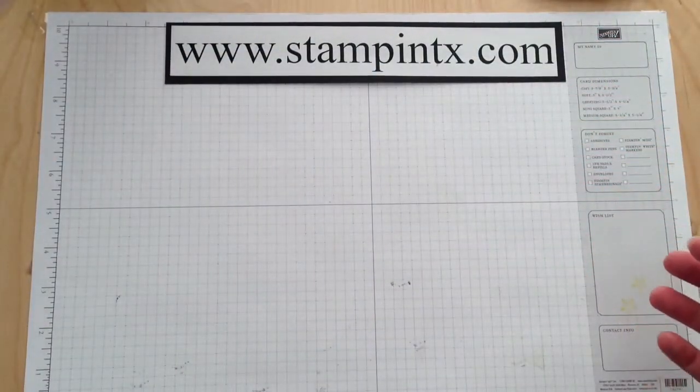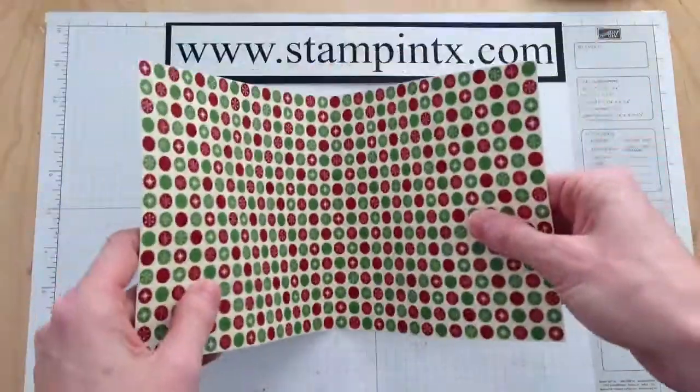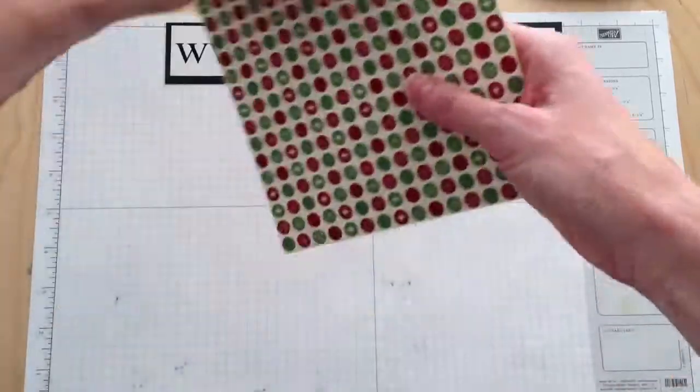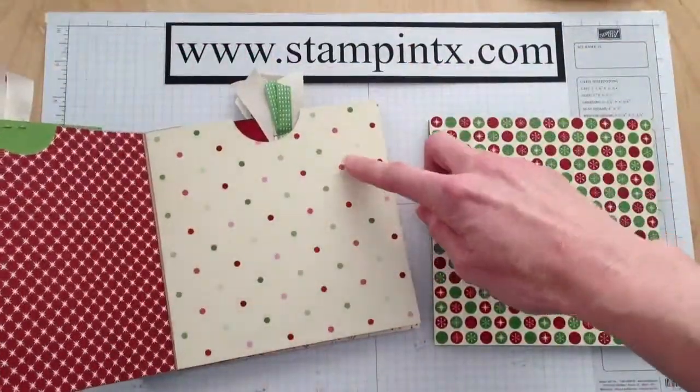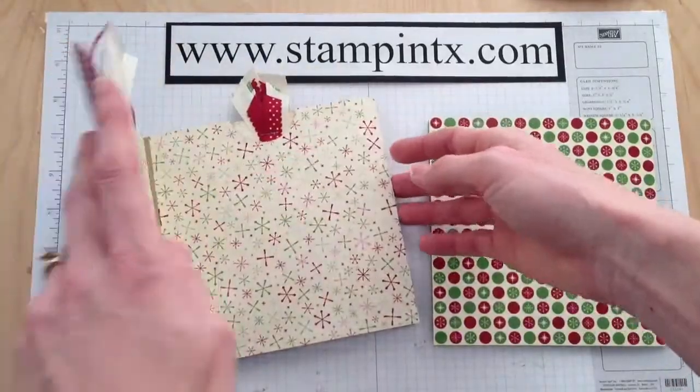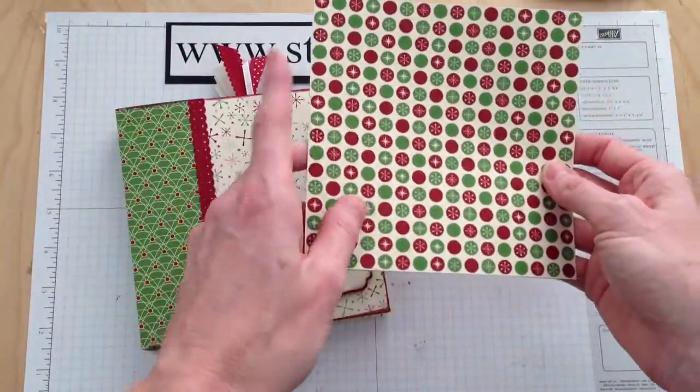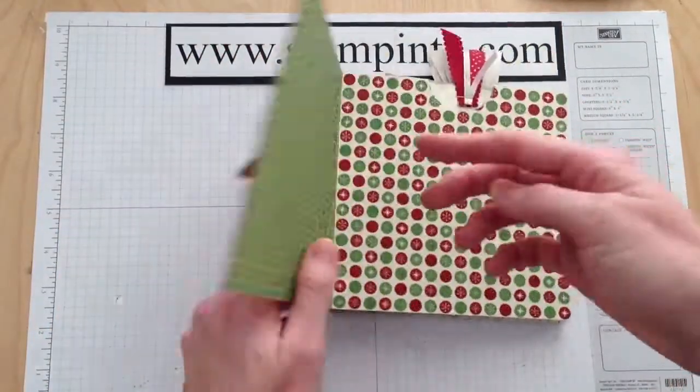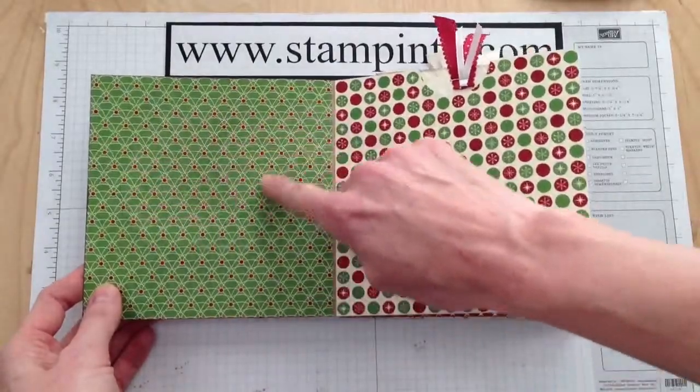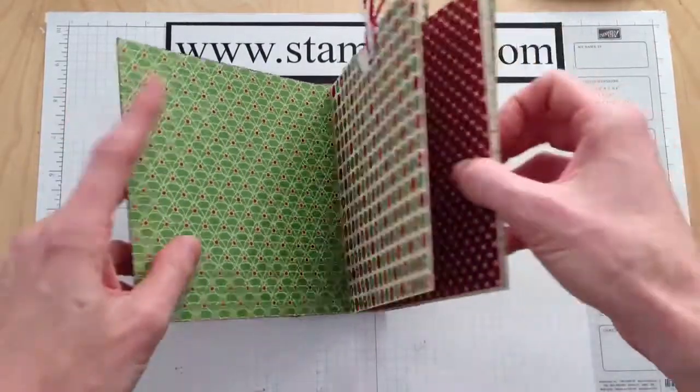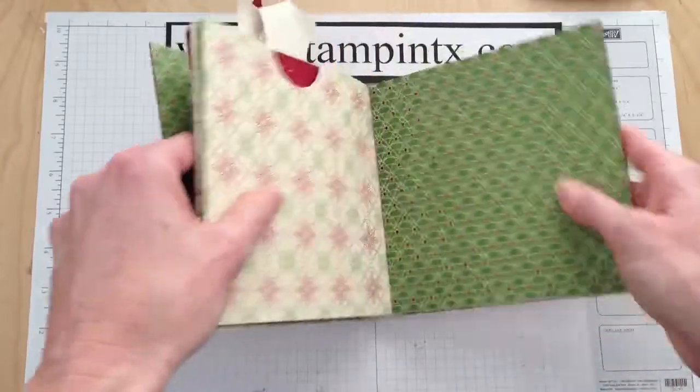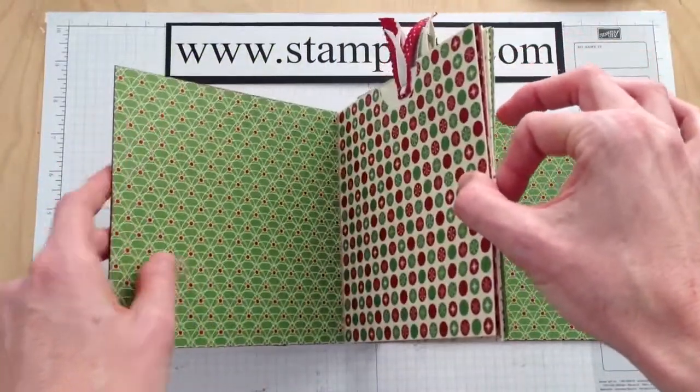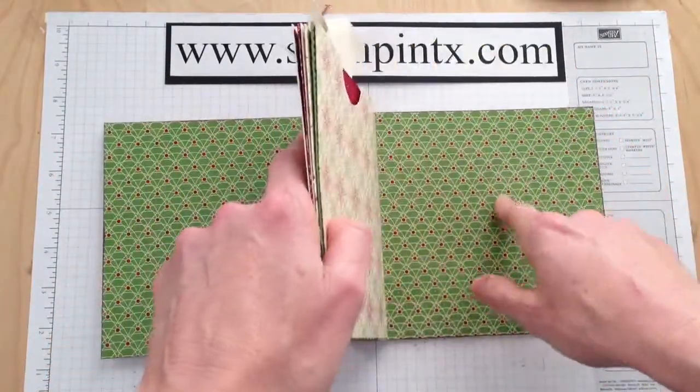You're also going to need six pieces that are cut 6 by 12. I have scored them and folded in half. These become the pages inside our book. So you'll need six of these from any kind of paper you'd like. Then you're also going to need two pieces that are 6 by 6 for the front inside cover and the back inside cover. So we've got your six 6 by 12 pages. Front cover and the back cover are 6 by 6.